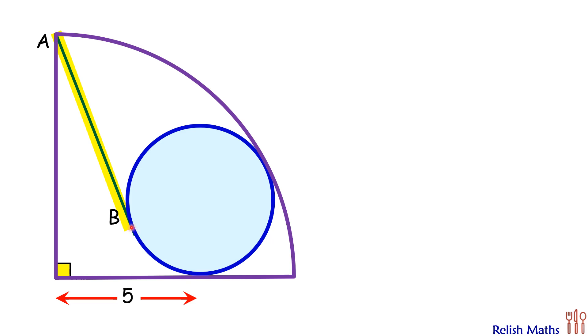To solve it, let's assume the radius of the quadrant is R and the radius of this small blue circle is r. Now let's name these points. Let's call this center as O and this center as Q. This point of tangent, let's call it P, and this point let's call it M.